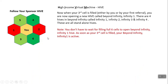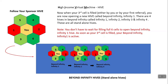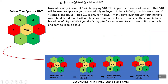When your third cell is filled — either by you or by your first referral — you are opening a new hive and a new opportunity called Beyond Infinity 1. There are four hives in Beyond Infinity: Beyond Infinity 1, 2, 3, and 4. These are all standalone hives. As soon as you fill the third cell, your Beyond Infinity 1 is active. Whoever joins in cell number 3 will be paying you $10 — this is your first source of income. That $10 will be used to automatically upgrade you to Beyond Infinity 1, which is part of the four standalone hives. This $10 is only for seven days.